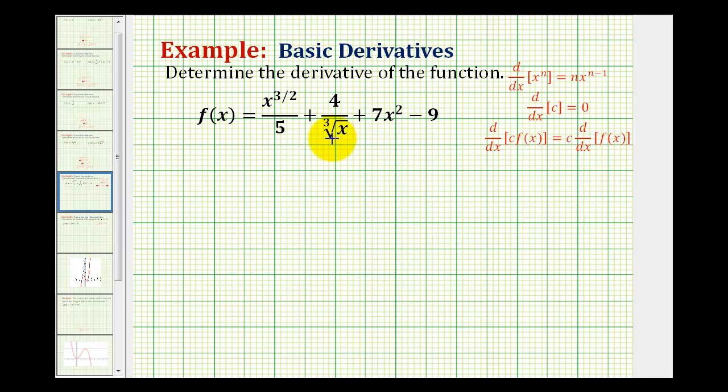We want to determine the derivative of the following function using the power rule, which tells us that the derivative of x to the power of n is equal to n times x to the power of n minus 1.